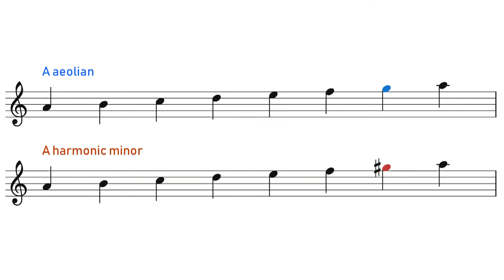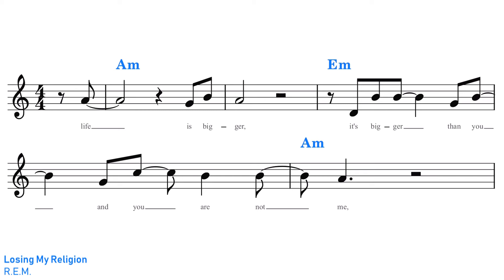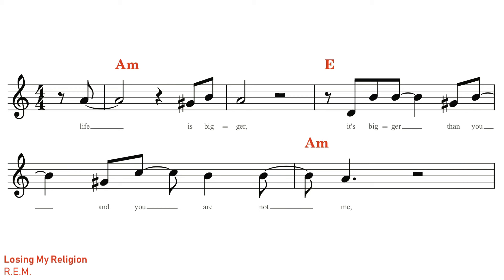To really hear this difference between the natural and harmonic minor, I'll show you what Losing My Religion would sound like if it was in the harmonic minor. First, here is Losing My Religion in its normal form in the natural minor scale, and then this is what it would sound like if it was instead in the harmonic minor scale. As you hear, we lose that laid-back sorrowful sound of the natural minor, and instead have a stricter, brighter, almost more sinister sound. They're both certainly minor, but they're different types of minor.